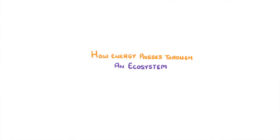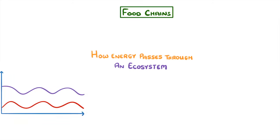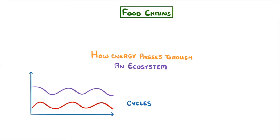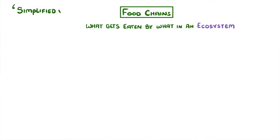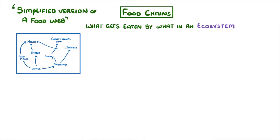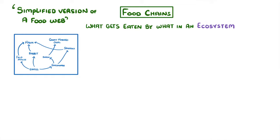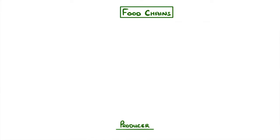In today's video we're going to see how energy passes through an ecosystem, which we can do using food chains. At the end we'll take a look at predator-prey cycles. All a food chain does is show what gets eaten by what in an ecosystem — it's basically a simplified version of a food web because it doesn't show all of the interactions, just one chain of them.